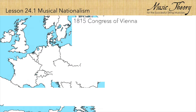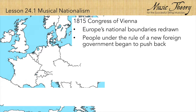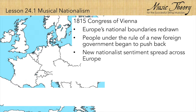In 1815, after Napoleon was defeated, the Congress of Vienna redrew the national boundaries of Europe and many people found themselves under the rule of a new foreign government. Inspired by the American and French revolutions, many began to rise up and push back against their foreign leaders. A new sentiment of national loyalty and identity spread across Europe, and this sentiment became known as nationalism.